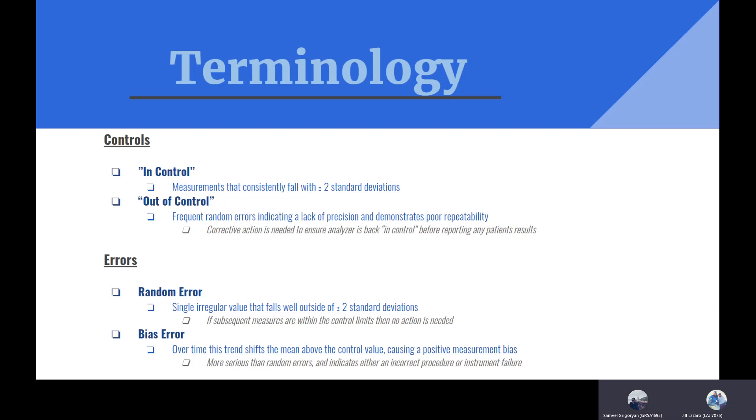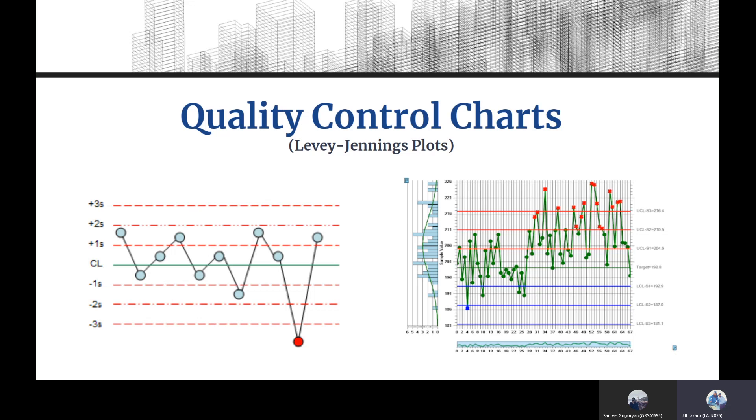This will make more sense when we look at how we check these out on the next slide. When we're looking at our controls and ABGs, there are charts we can look at called quality control charts, also known as Levey-Jennings plots. I put some pictures here to give you a visual of exactly what I'm talking about.